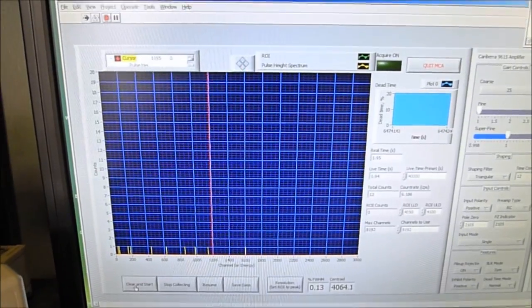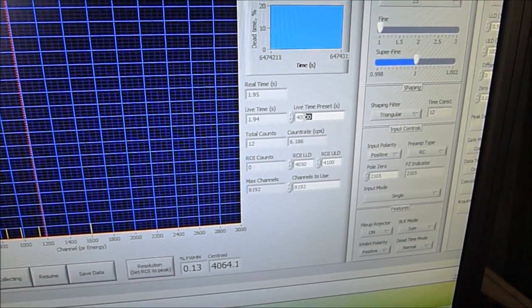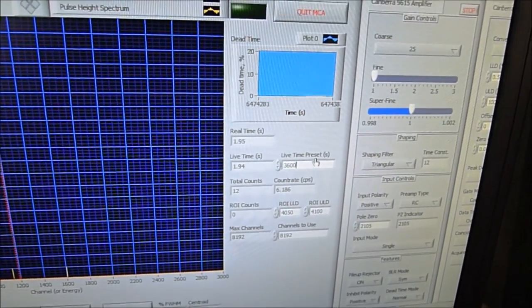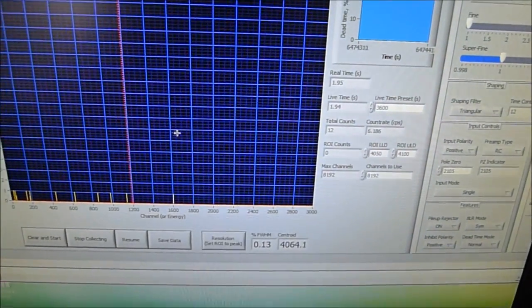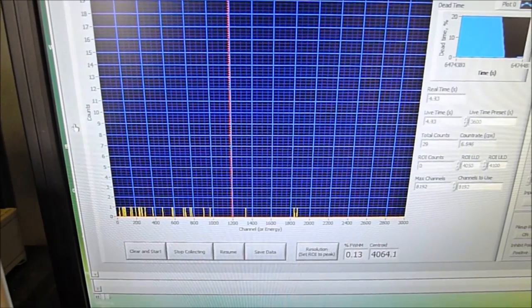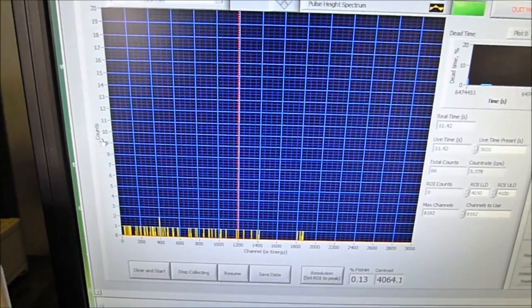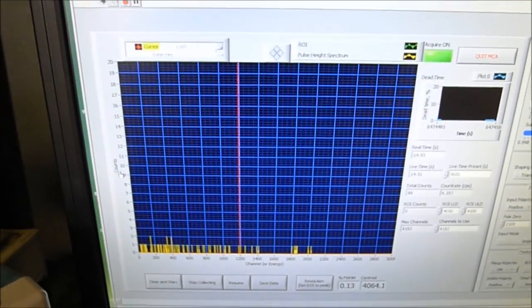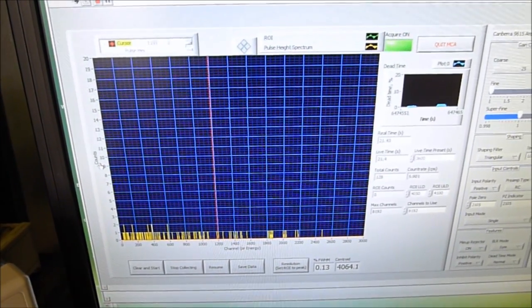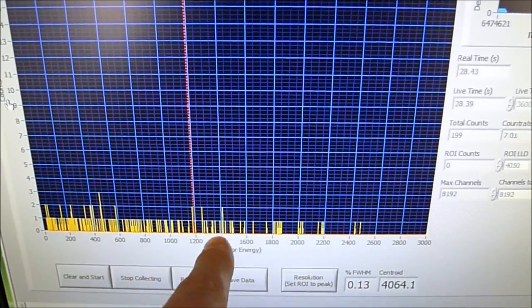And I'm going to hit start. Actually, we'll set a time preset. And why don't we set that for one hour. We're going to set this for 3600 seconds. And I'm going to hit start. And so we're now accumulating pulses. Each of these pulses represents a gamma ray that has been detected in that detector. And we're going to be looking for a gold-198 gamma ray at the energy of 477 kiloelectron volts. And on this pulse height spectrum, we expect that somewhere in this neighborhood.